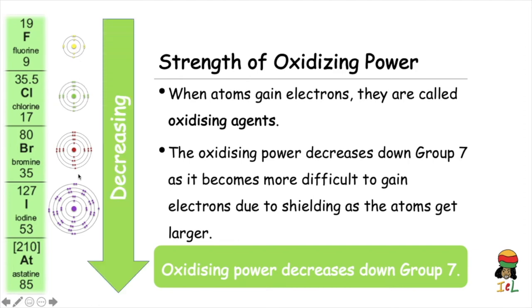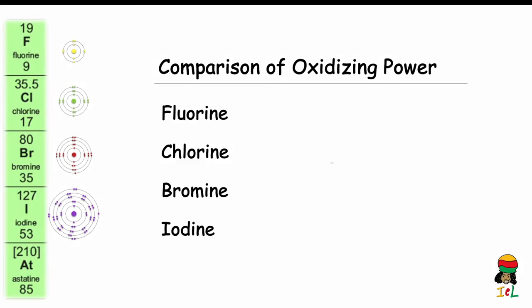Fluorine, being the smallest atom of the Group 7 elements, will gain or accept electrons more readily. Hence it is the most oxidizing of the halogens — the most powerful oxidizing agent. Fluorine has the smallest atomic radius of all the halogens, so there is less shielding of the nuclear pull for the outer shell electrons. As a result, fluorine is most likely to accept an additional electron on the last shell when it reacts.